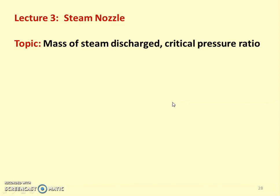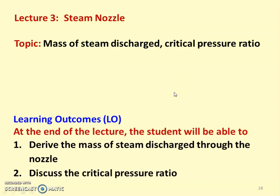Dear friends, welcome back to the lecture series in the steam nozzle. This is lecture number 3. The topic for this lecture is mass of the steam discharge and the critical pressure ratio. The learning outcome: at the end of the lecture, the student will be able to derive the mass of the steam discharge through the nozzle and discuss the critical pressure ratio in a convergent-divergent nozzle.